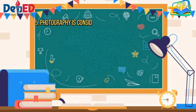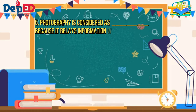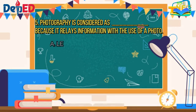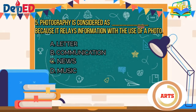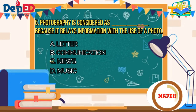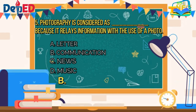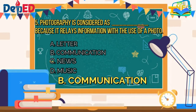Number 5: Photography is considered as blank because it relays information with the use of a photo. A. [art], B. communication, C. news, D. music. The correct answer is letter B — communication.